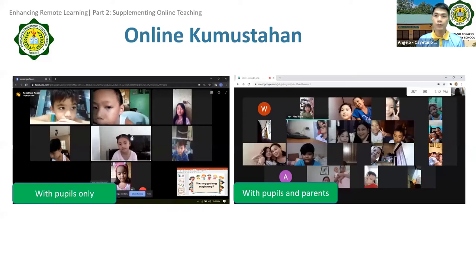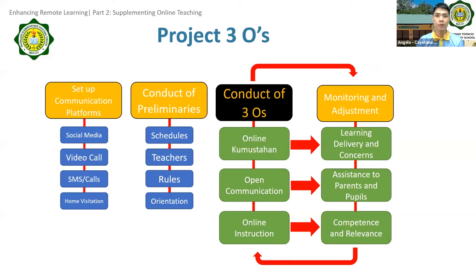With the feedback I received and the solutions my teachers provided, we have improved the system for this school year. What are the key takeaways? First, the pandemic has hampered the connection between school and community — the school has to use all means and exert all effort to reach its pupils and parents. Second, it is quite challenging for schools and especially pupils to separate home from school, play from study during distance learning.